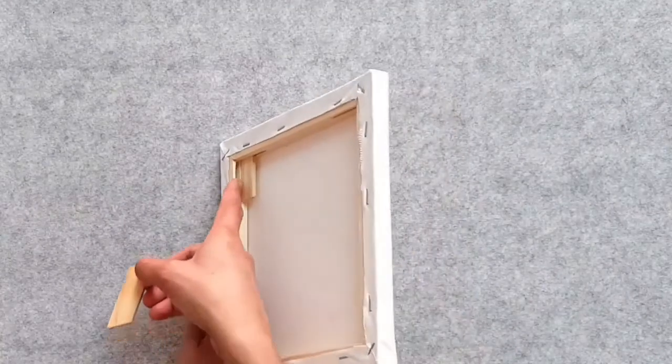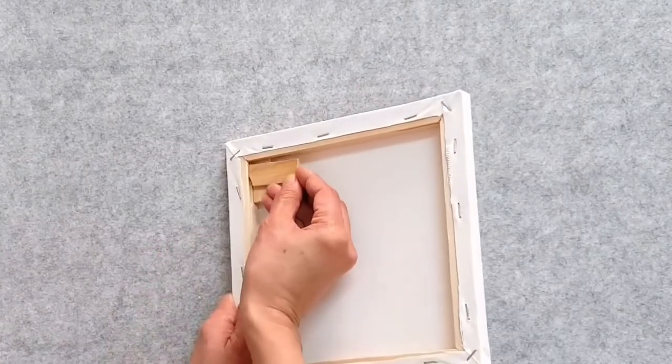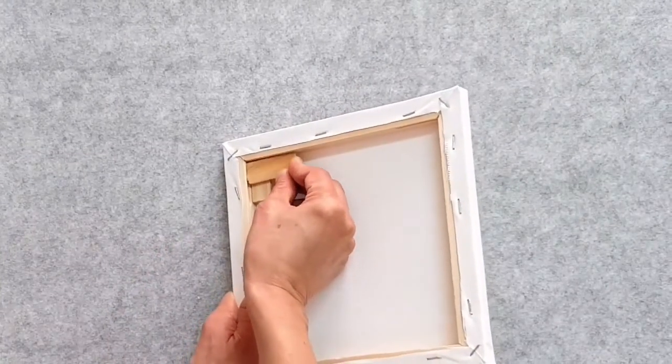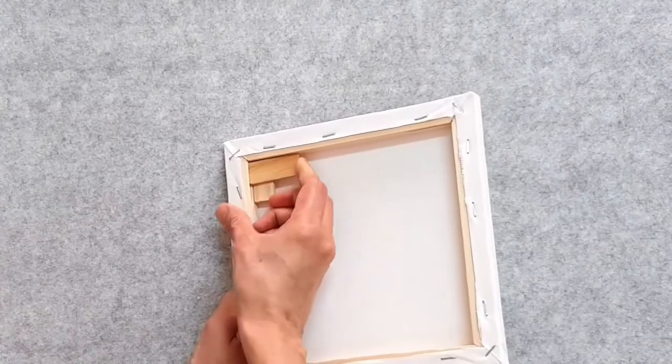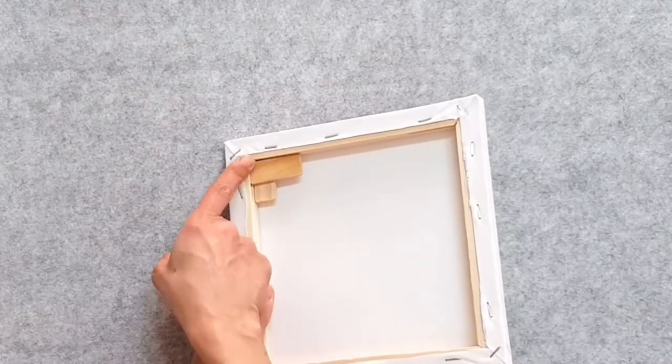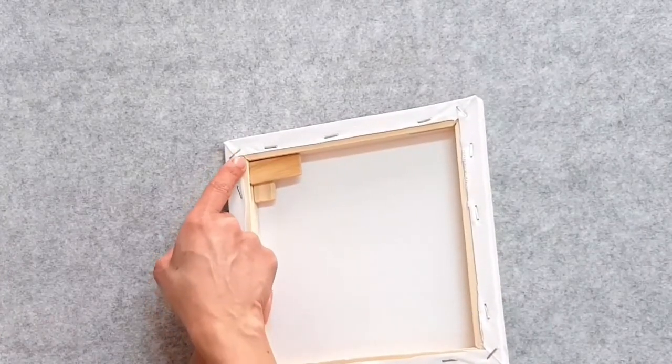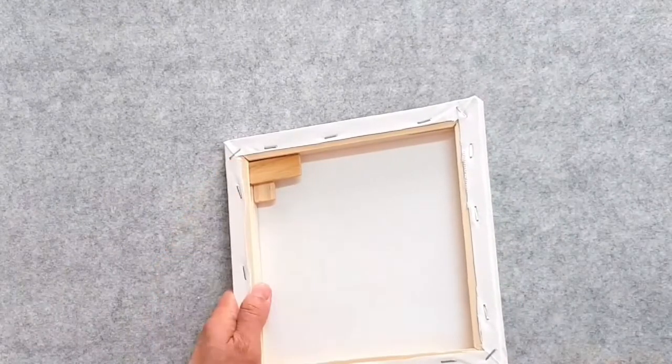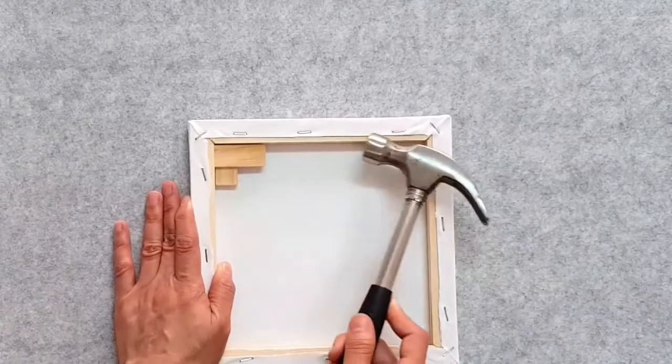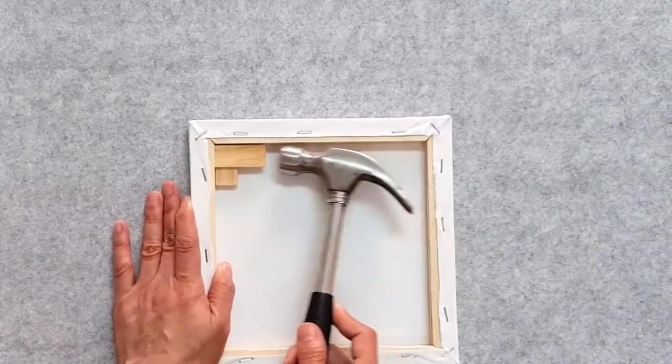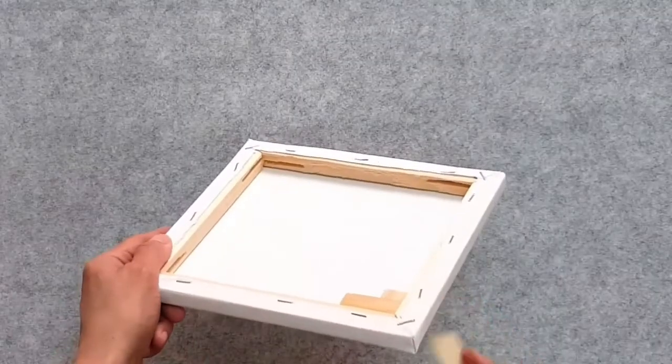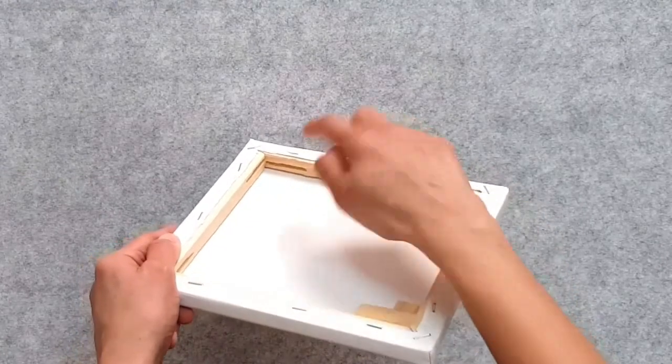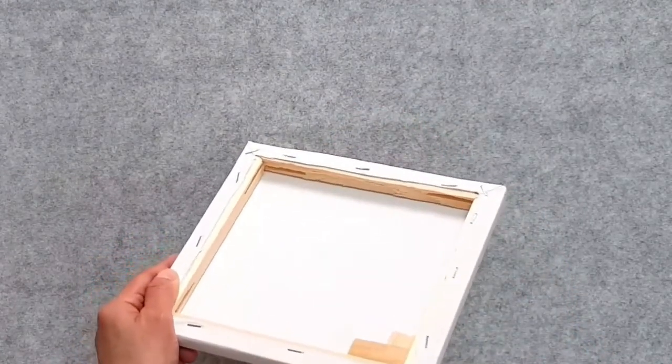Now insert the second key to another slot given. Make sure you are holding it the way shown here. You can see the frame opened up a little bit. Gently tap it. Now the same way insert the keys to the opposite corner.